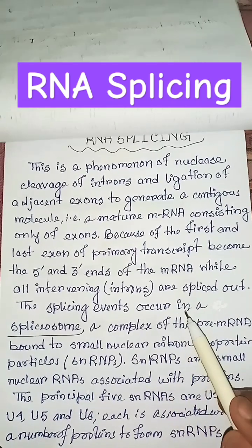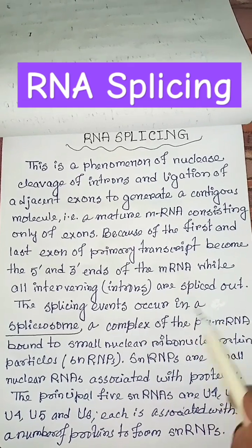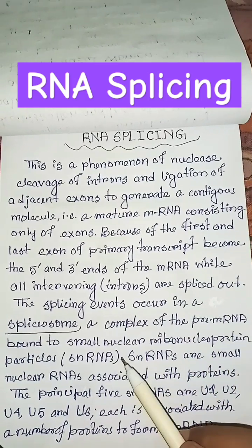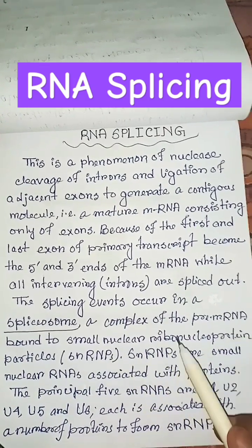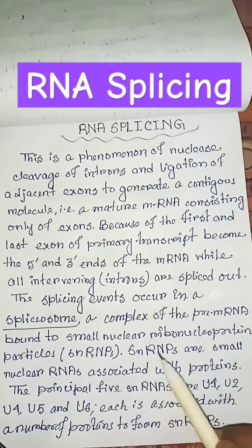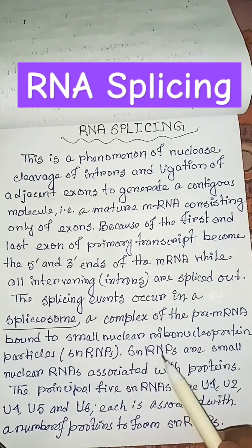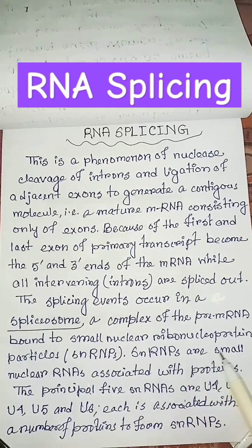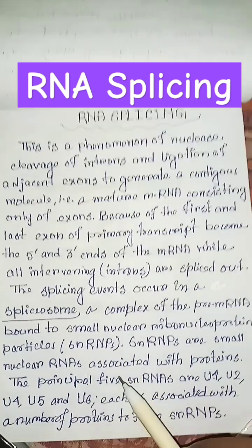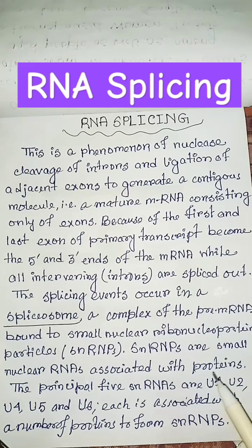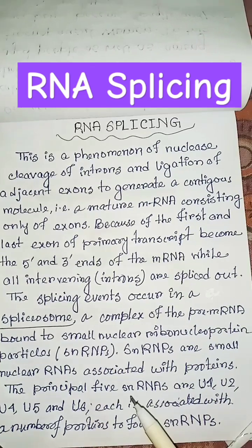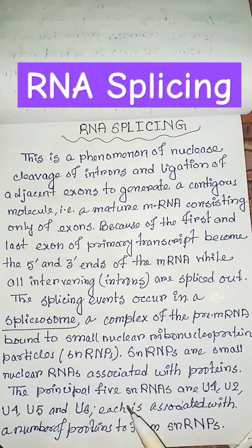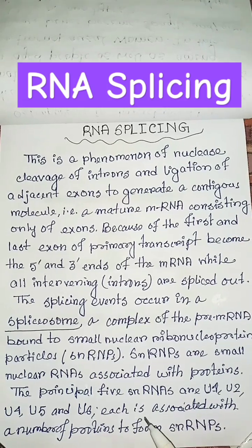The splicing events occur in a spliceosome, a complex of the pre-mRNA bound to small nuclear ribonucleoprotein particles, snRNPs. snRNPs are small nuclear RNAs associated with proteins. The principal 5 RNAs are U1, U2, U4, U5, and U6.